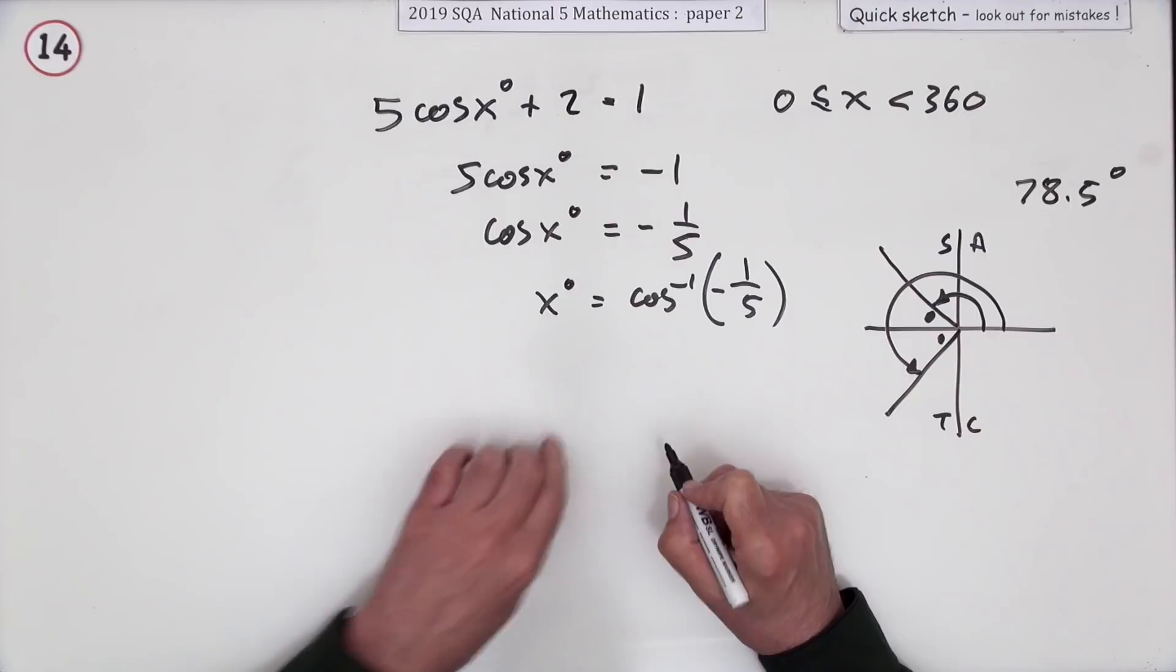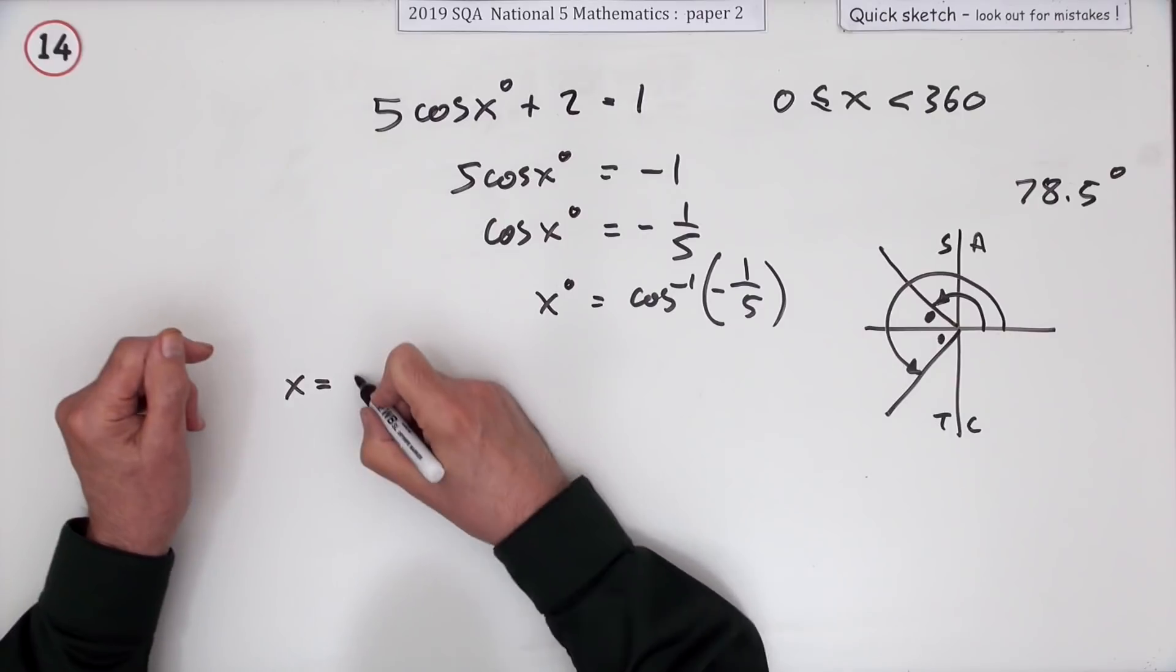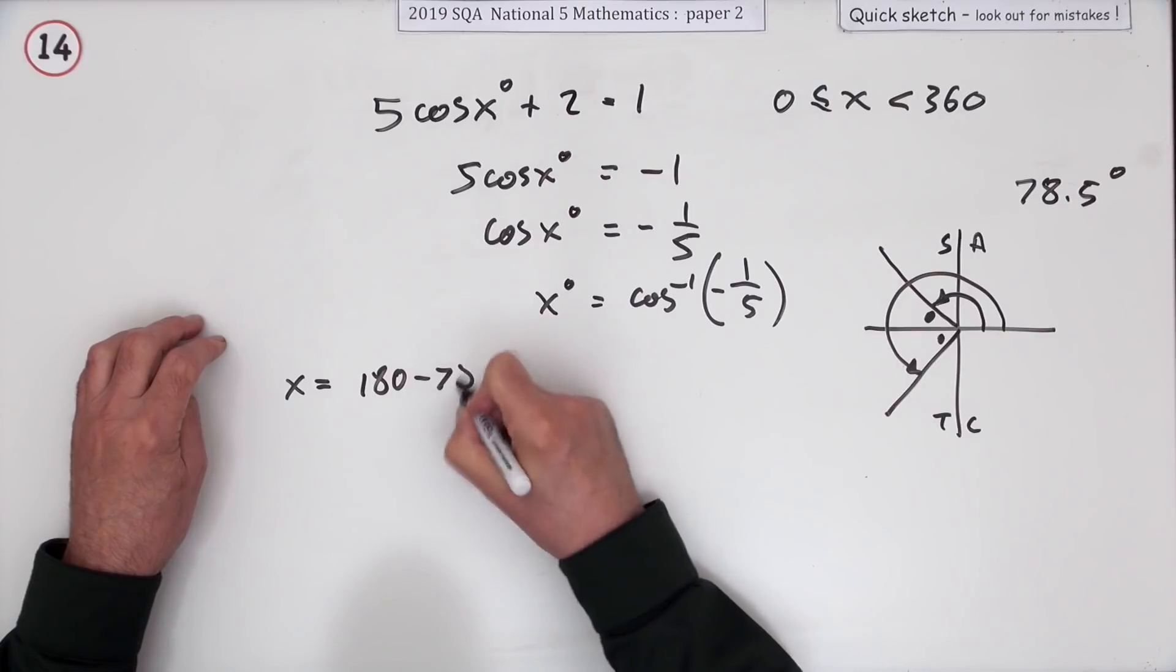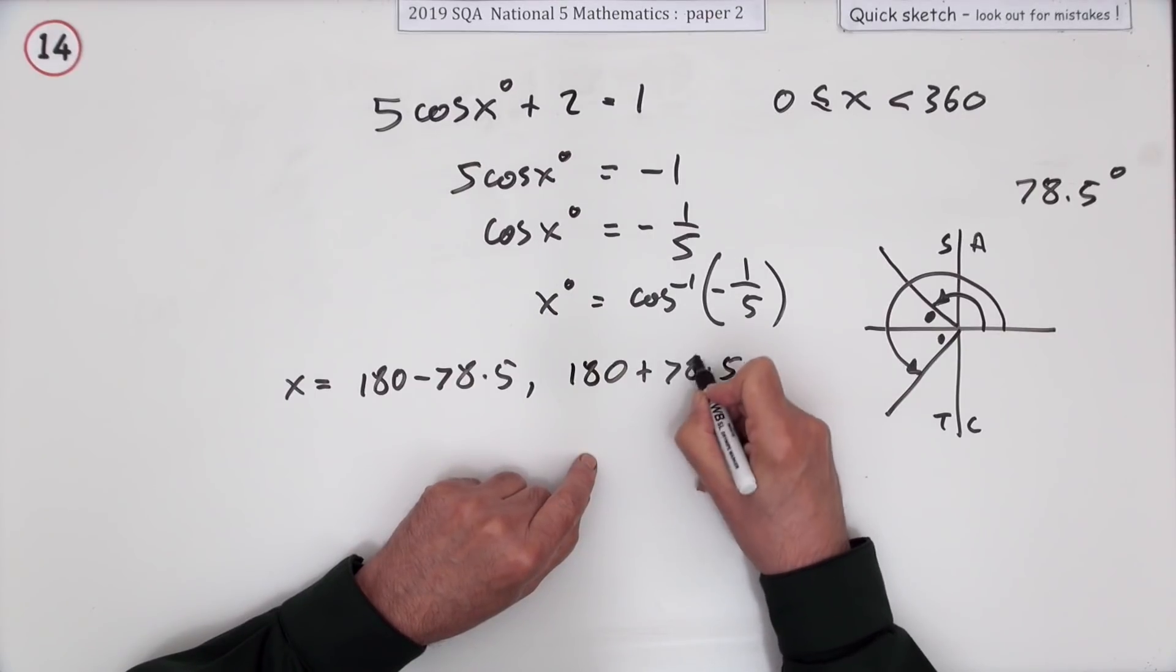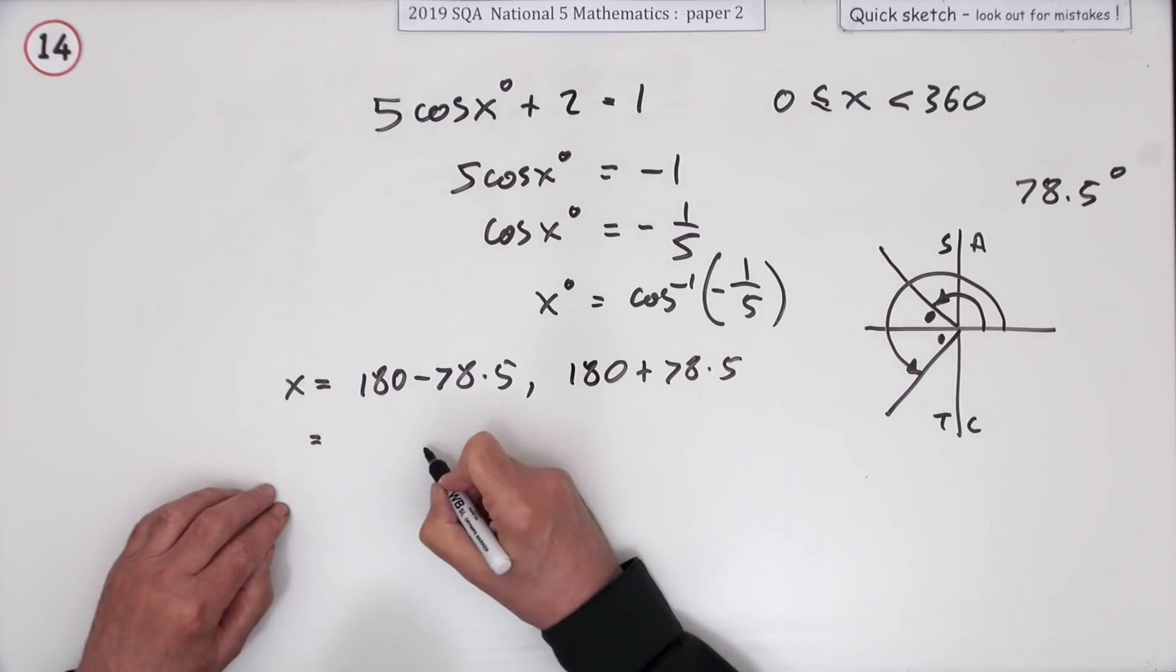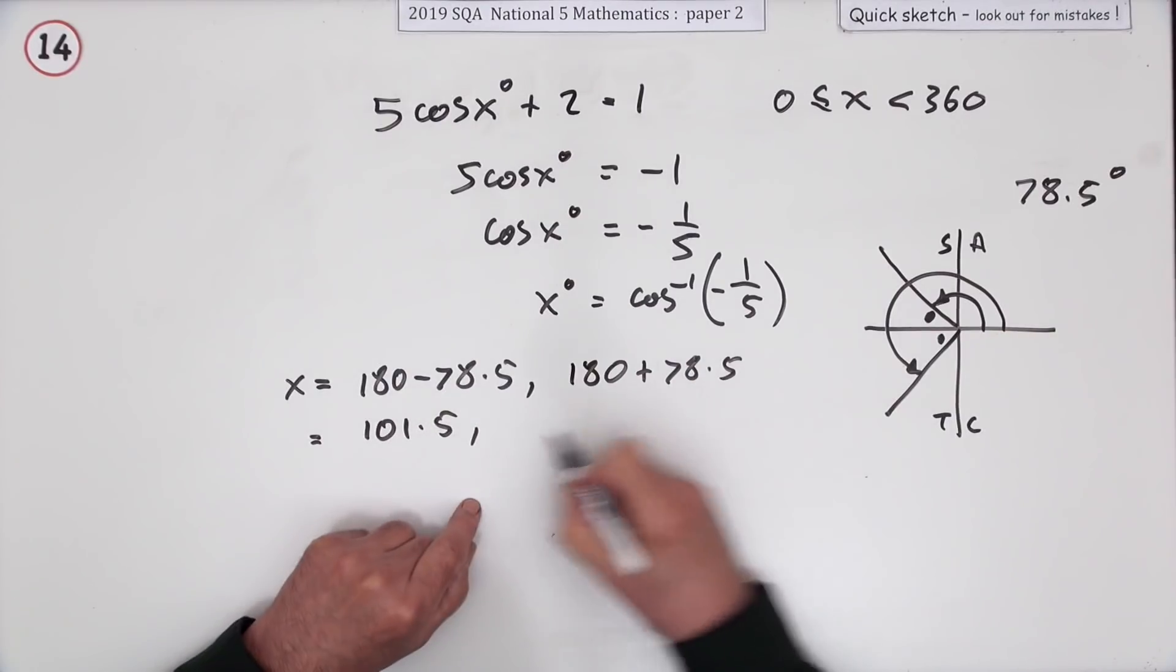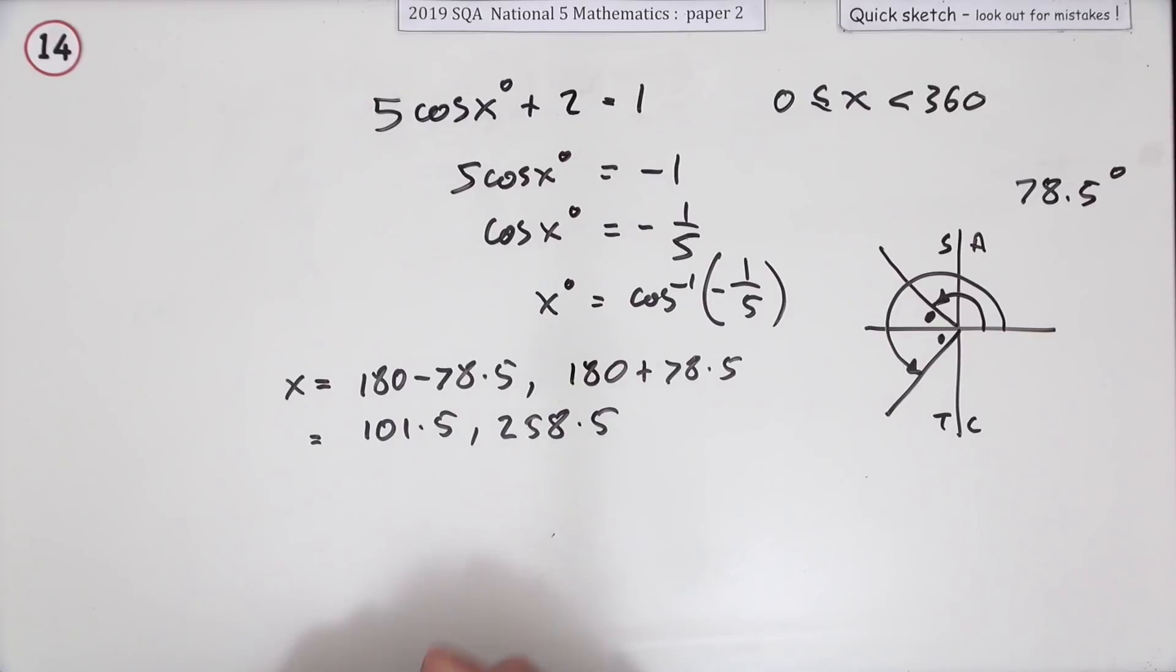So x is going to be - now I'm going to remove the degree signs because strictly speaking x is just a number - it's either going to be 180 - 78.5 or it's going to be 180 + 78.5. So it's either going to be 101.5 or 258.5. But if you put degree signs in there, you're not going to be penalized for that.